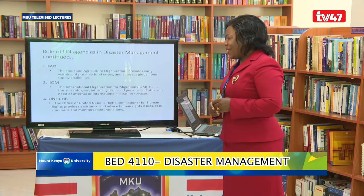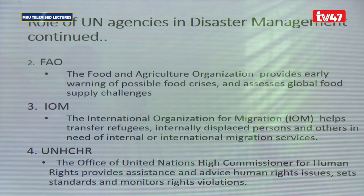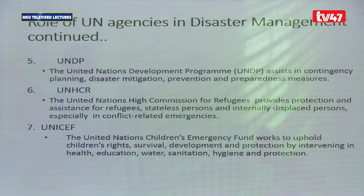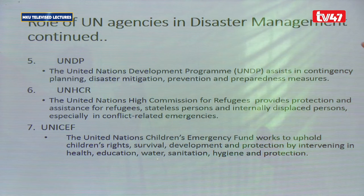Number four is UNHCHR — the Office of the United Nations High Commissioner for Human Rights. Please do not confuse this with the next one. UNHCHR provides assistance and advice on human rights issues and sets standards and monitors human rights violations. Number five is UNDP — United Nations Development Programme — which assists in contingency planning, disaster mitigation, prevention, and preparedness measures.